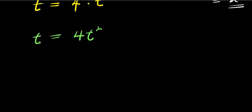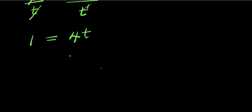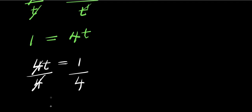At this point we can divide both sides by t. If t cancels t we have 1, because this is t to the power of two and this is t to the power of one — this will cancel one of these, leaving 4 times t, so 4t. We can rearrange this and have 4t equals 1. We can solve for t by dividing by 4 on both sides; 4 eliminates 4, and we then have t equals 1 over 4.